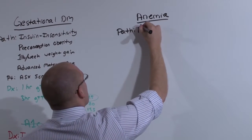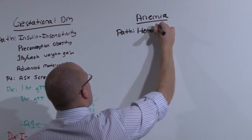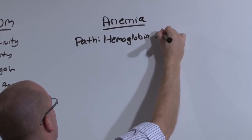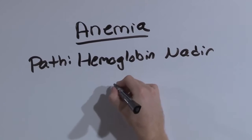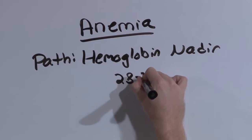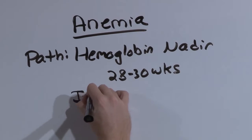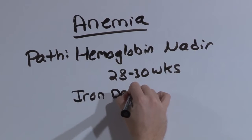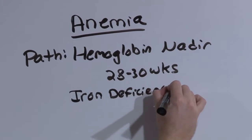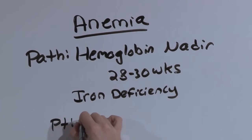So, the hemoglobin is going to nadir at around 28 to 30 weeks. And if she has an actual anemia, it will most likely be iron deficiency.